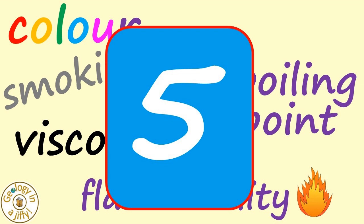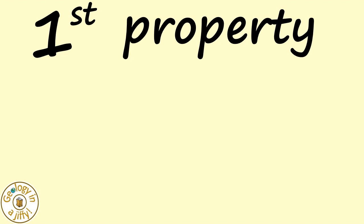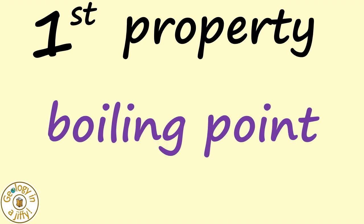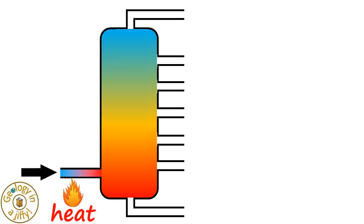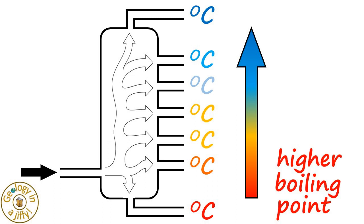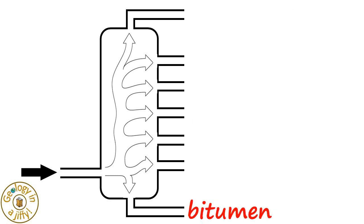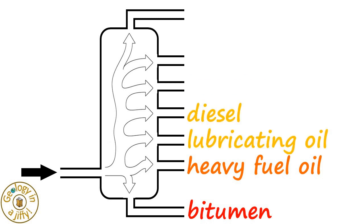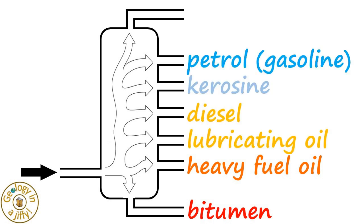Let's study five different properties of the fractions we get from these towers. The first property is the boiling point. We know that the tower is hottest at its base, where the fractions with higher boiling points are extracted, the boiling point decreasing as we move up the tower, with bitumen having the highest boiling point, this decreasing upwards through heavy fuel oil, lubricating oil, diesel, kerosene, petrol, to the fraction with the coolest boiling point, refinery gases, at the top.